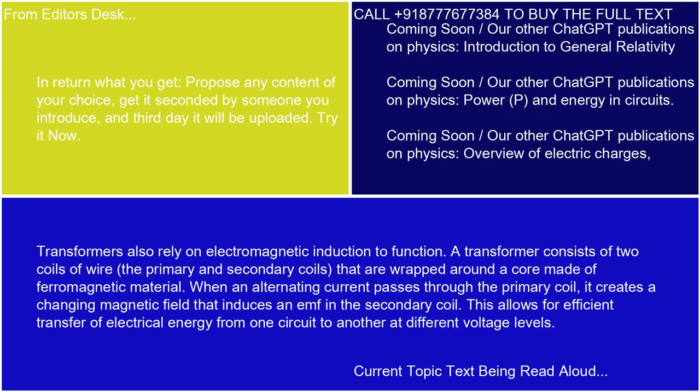Transformers also rely on electromagnetic induction to function. A transformer consists of two coils of wire — the primary and secondary coils — that are wrapped around a core made of ferromagnetic material. When an alternating current passes through the primary coil, it creates a changing magnetic field that induces an EMF in the secondary coil. This allows for efficient transfer of electrical energy from one circuit to another at different voltage levels.